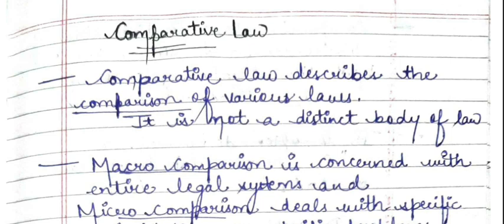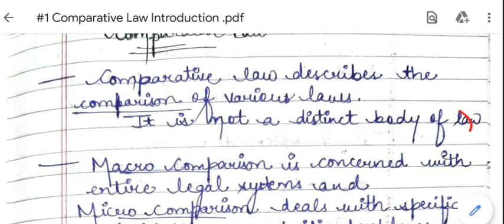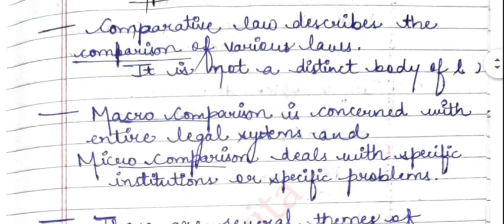Comparative law describes the comparison of various laws. It's not a distinct body of law. Comparative law is not a particular body; rather, it is the comparison of different laws which prevail across the world in different countries — either in terms of their similarities or in terms of their differences. That process of comparing the laws is what is known as comparative law.